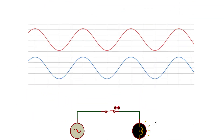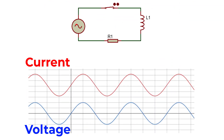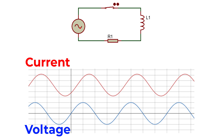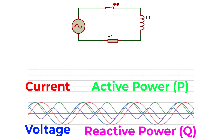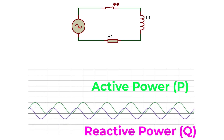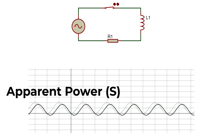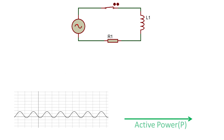When we add inductive loads like motors or coils, the current lags behind the voltage. This creates reactive power, represented by Q, which doesn't do useful work but still takes up energy. The total power consumed by the system is called apparent power, or S, which is the combination of P and Q.